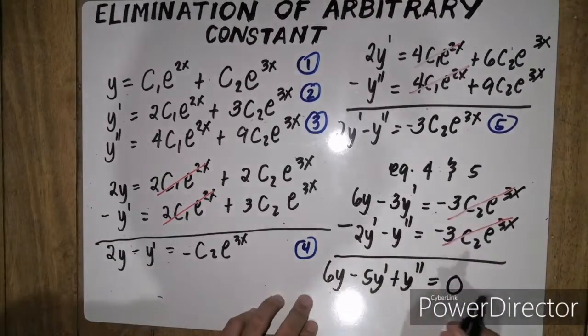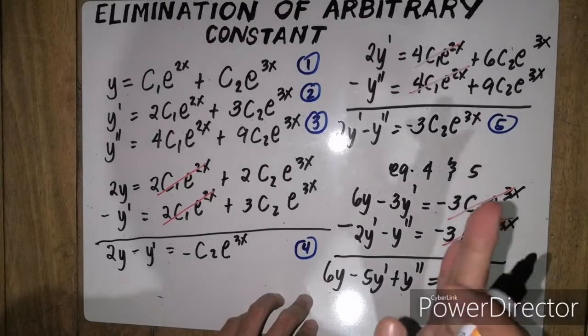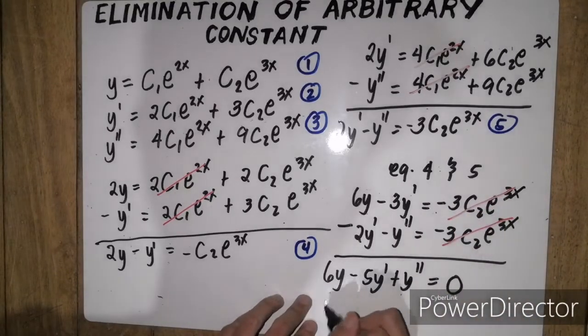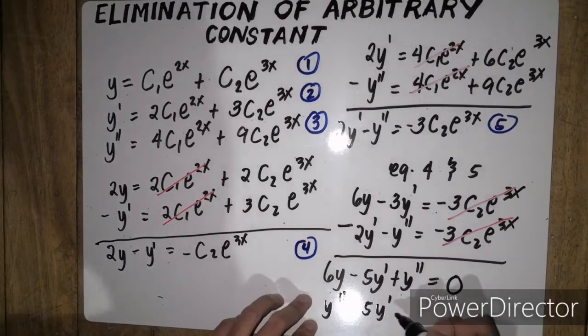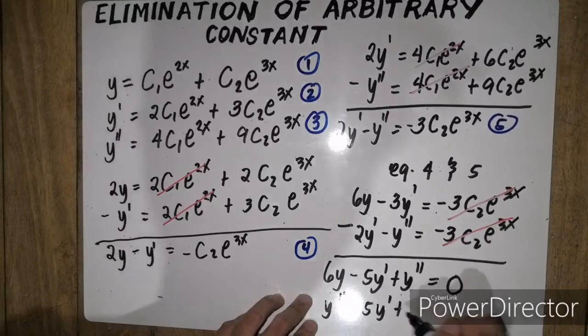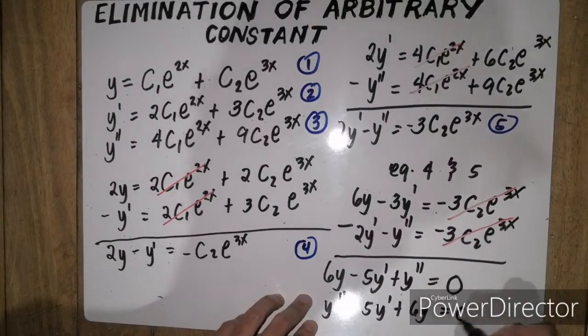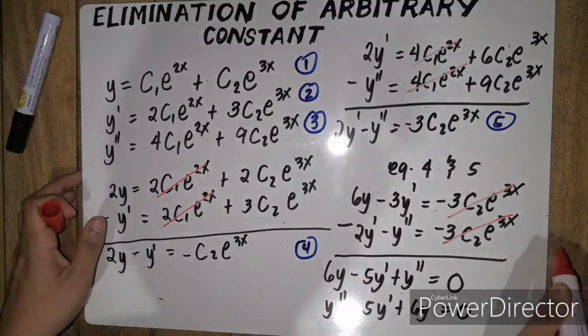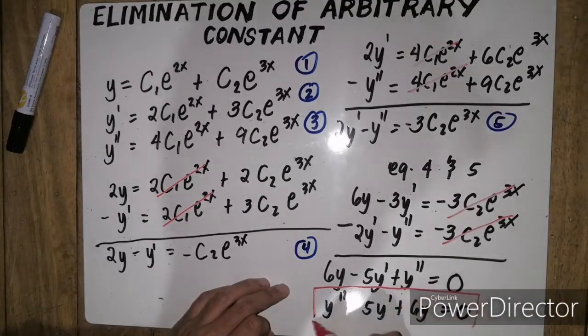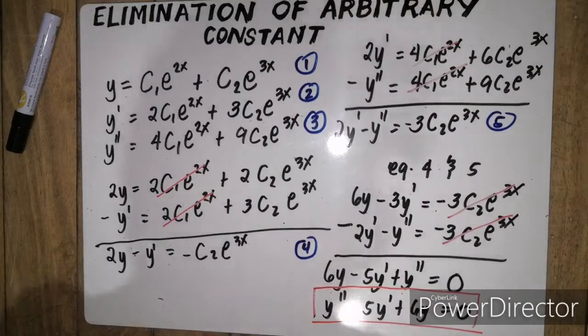So, let's rearrange it in descending order. We have y double prime minus 5y prime plus 6y equals 0. So, in elimination of arbitrary constant, this is our final answer.